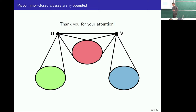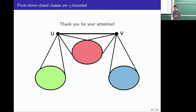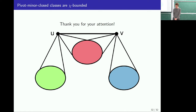I'll stop there. Thank you very much. [Applause] Any questions? For the Strong EH result for fuzzy odd subdivisions, is that proof pretty similar to the subdivisions proof? Yes, it's definitely adapting that — there are bits where it's a bit harder, but it is very much adapting the subdivision proof.